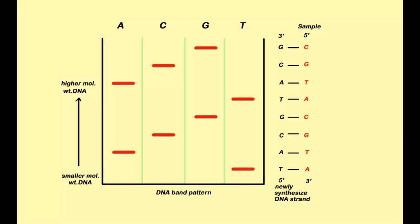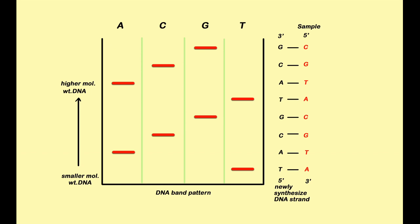Sanger sequencing is considered quite accurate, but only short segments of about 300 to 1000 base pairs can be sequenced by it, so that is the limitation. This whole sequencing has become quite simplified now. These days chain termination kits are available commercially in the market. Although many advanced and next generation methods are available, this method is still in use in labs. Thank you so much. I hope you could understand Sanger's method.